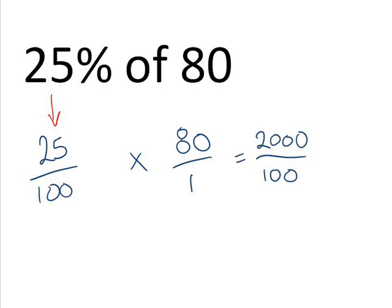So, you end up with a fraction of two thousand over one hundred, which, when you work it out, equals twenty. So, that completes how to work out fractions or percentages of an amount. Good luck with those.